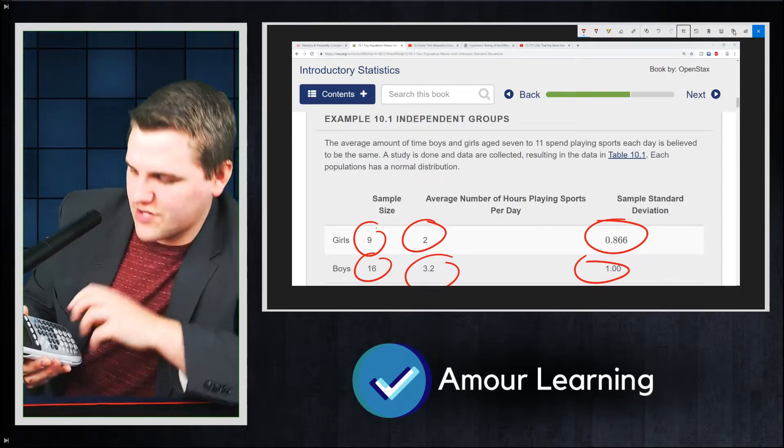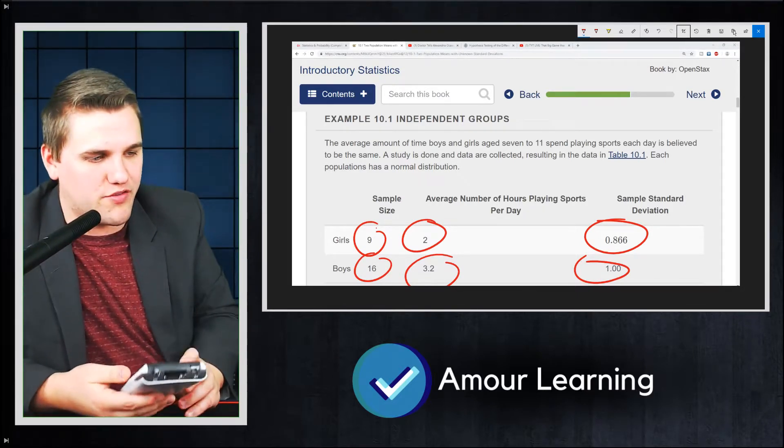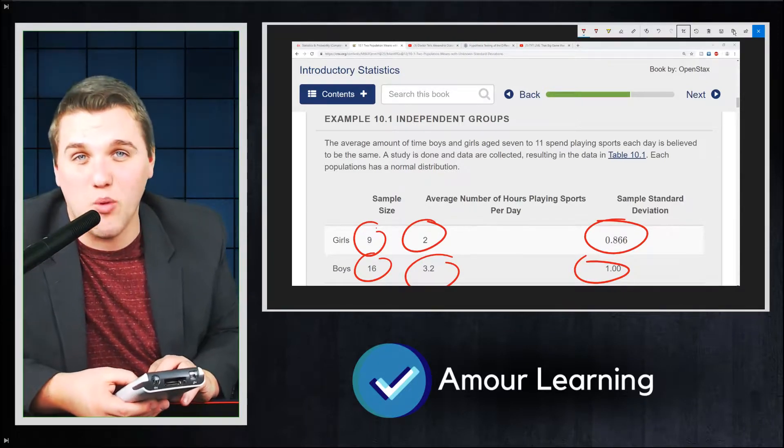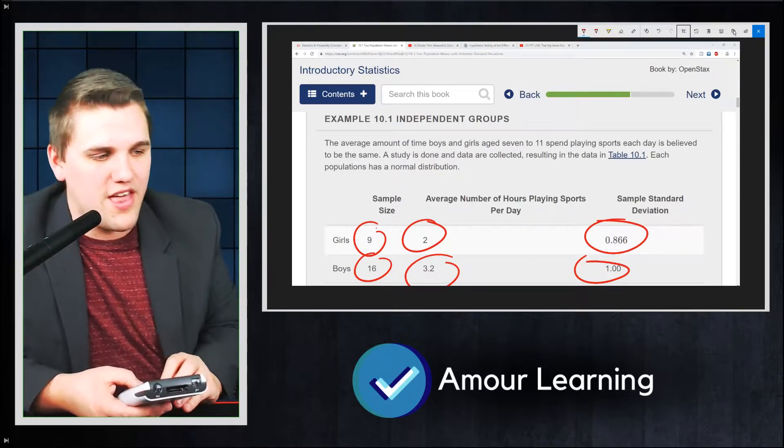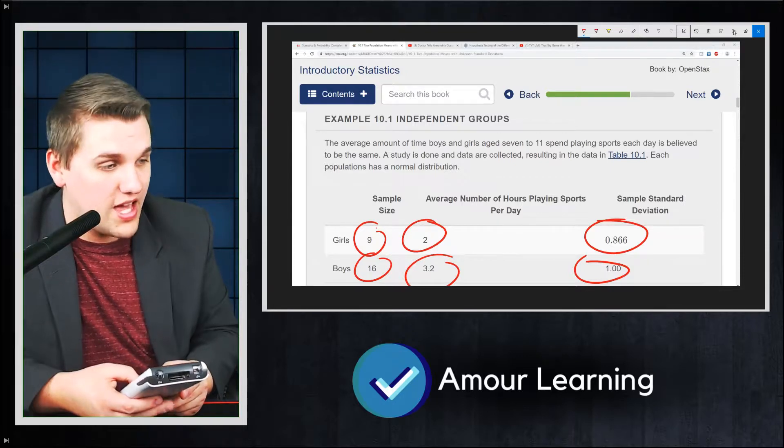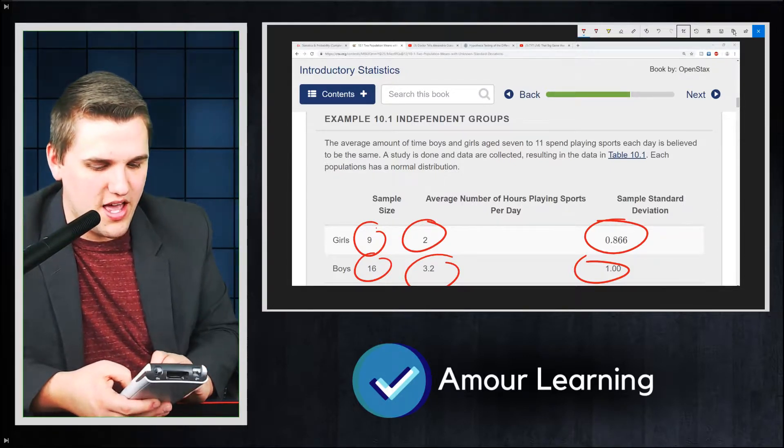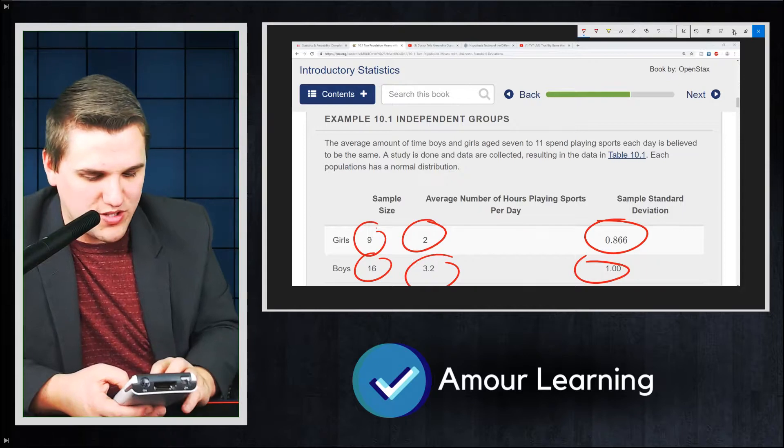So it's going to ask for x1 bar, which is the average of your first sample, which in this case we'll say sample 1 is the girls, sample 2 is the boys. The first average is 2. The first standard deviation is 0.866, and the size of that sample was 9.